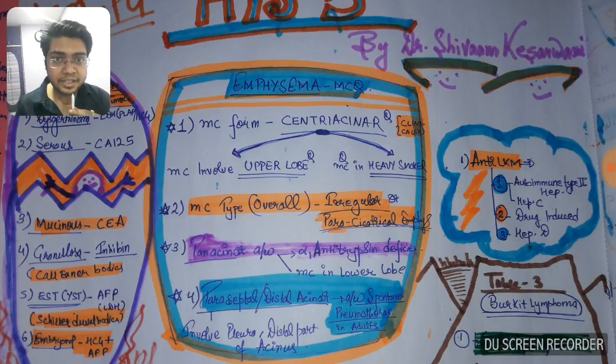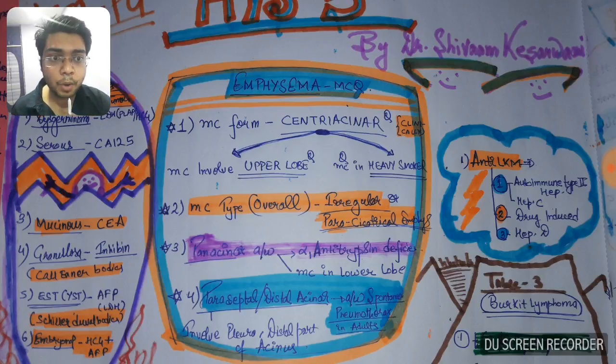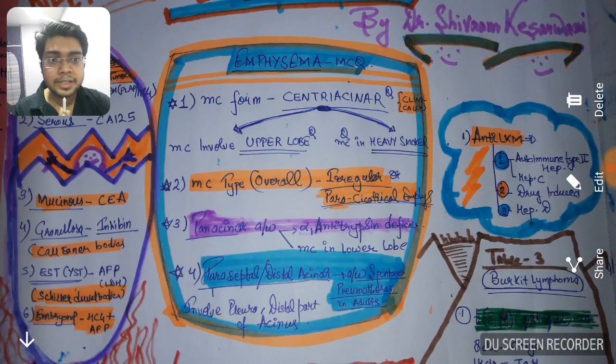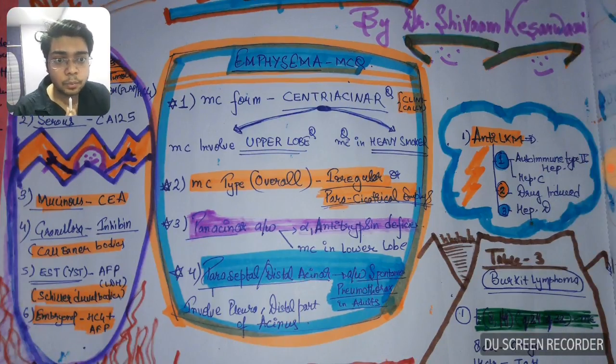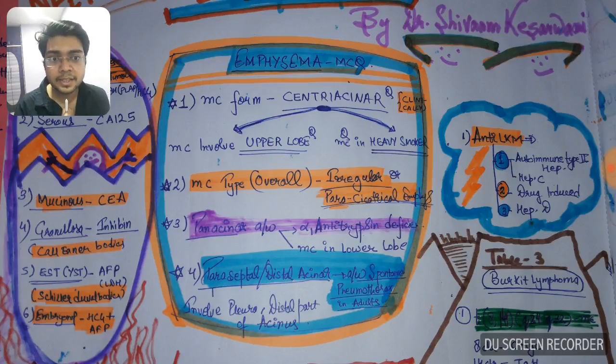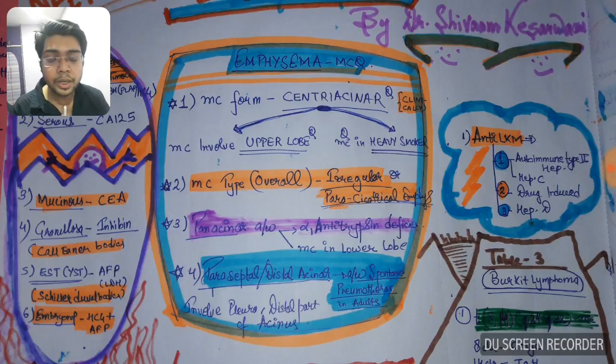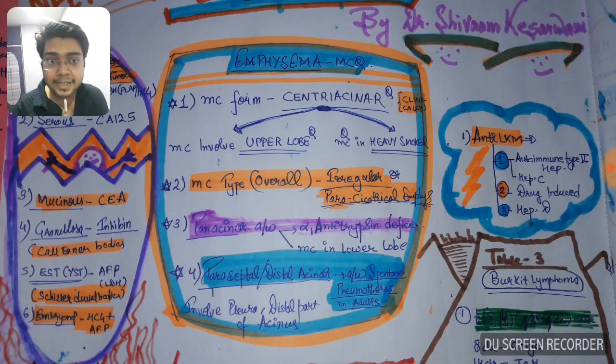The emphysema associated most commonly with spontaneous pneumothorax in adults is paraseptal or distal acinar emphysema. It is called distal acinar because it involves distal part of the acinus and it also involves the pleura, so the pleura spontaneously ruptures. Most commonly associated with spontaneous pneumothorax in adults will be paraseptal or distal acinar.